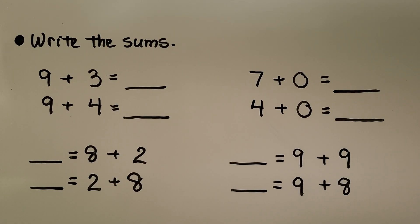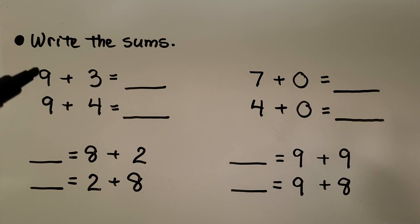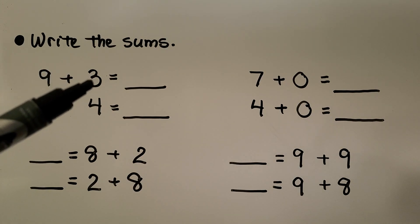Here we need to write the sums. We have 9 plus 3. We start with the greatest addend 9, and we can count on 3. 9, 10, 11, 12.